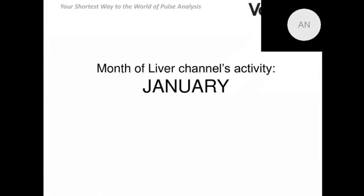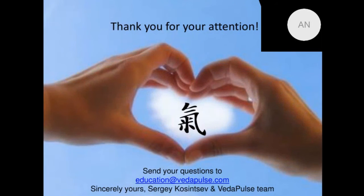The month of the liver channel's activity is January, with the channel being most active from the 7th of January to the 5th of February — remember this when working with your prescriptions, as it can be useful information to strengthen the effect. And now we are finishing the great celestial circle of 12 meridians. We hope you liked this information and it will be useful — practice it and use traditional Chinese medicine knowledge together with Ayurvedic ideas. Thank you very much, keep in touch, it was very nice to talk to you today. Goodbye.